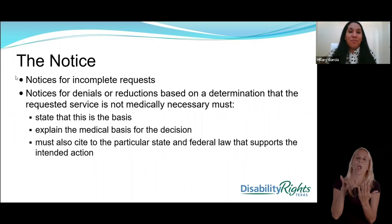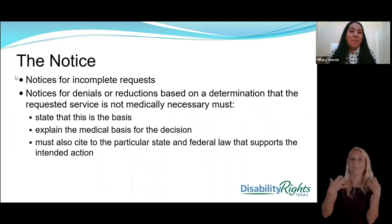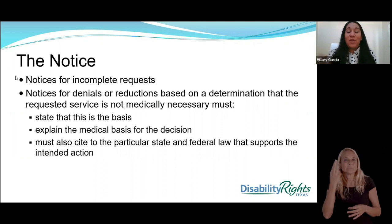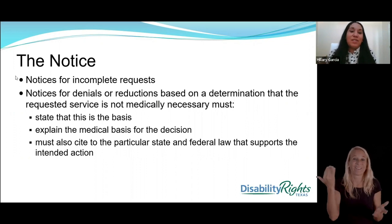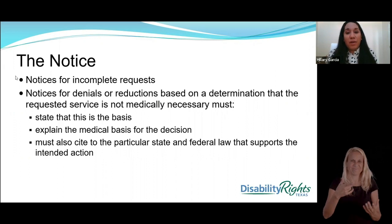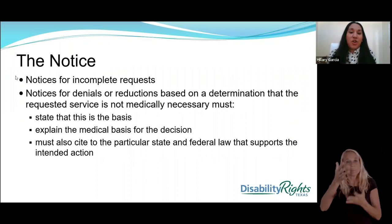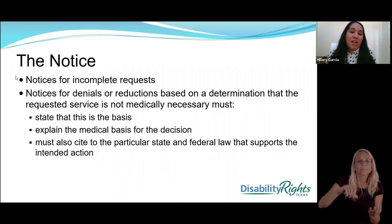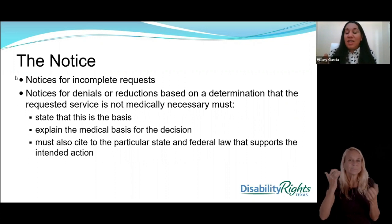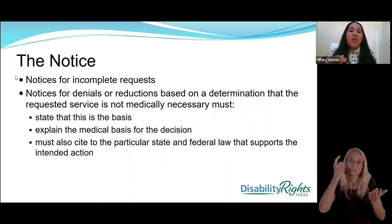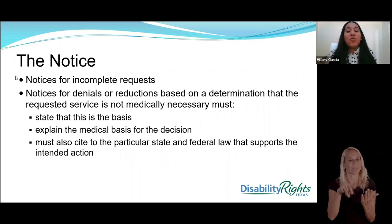A decent notice is supposed to provide you information so that you can explain to someone else: 'I received this denial notice from my health plan or the Health and Human Services Commission or TMHP, and this is why I'm being denied.' Don't be concerned if that doesn't happen — we see notices we would determine are inadequate because they don't provide the beneficiary with enough information to know how to combat the denial, determination, or suspension. It should be easily understandable, but if it's not, this is information you should be aware of — that you have the right to this information.